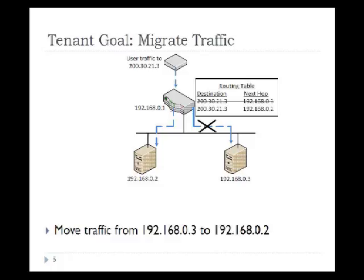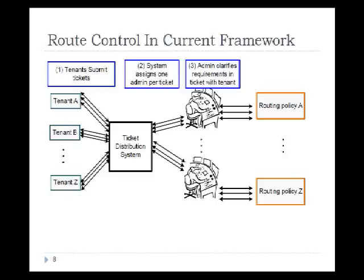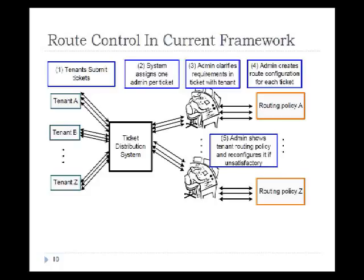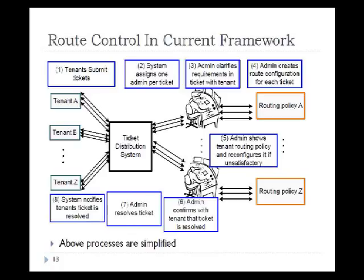Currently, the way you perform these changes is as follows. The tenant submits a ticket to a ticket distribution system, which assigns a dedicated admin to the ticket. The admin clarifies the requirement with the tenant through several rounds of communication. Once clarified, the admin creates a route configuration, then shows the tenant the routing policy to confirm it satisfies the requirement — again requiring several rounds of discussion. Once confirmed, the ticket is resolved and the tenant is notified.